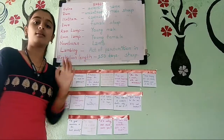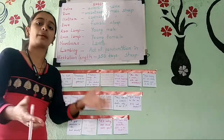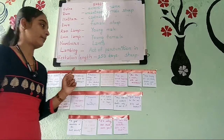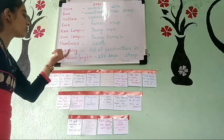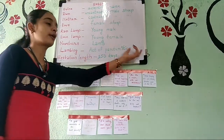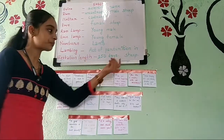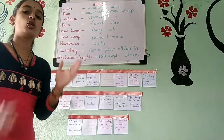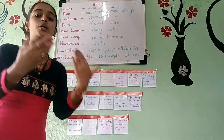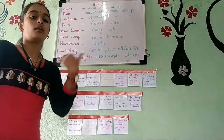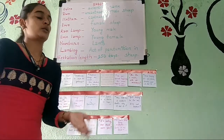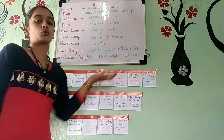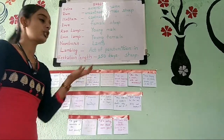Next, the newborn — the newborn is called a lamb. Whatever baby is produced, that will be called a newborn lamb. Next is lambing — lambing is the act of parturition in sheep. When a sheep gives birth to a baby, that process is called lambing.